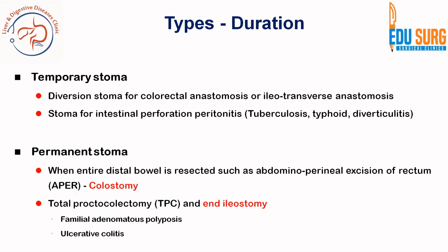For permanent stomas, such as in Case 1 where an APR is done and the entire distal bowel is resected, you will need a permanent end colostomy. There is also an indication for a permanent end ileostomy, done in cases of total proctocolectomy for indications like familial adenomatous polyposis or ulcerative colitis. The planning of these cases is what helps you decide whether you need a temporary or permanent stoma, and whether you need an end or loop stoma.